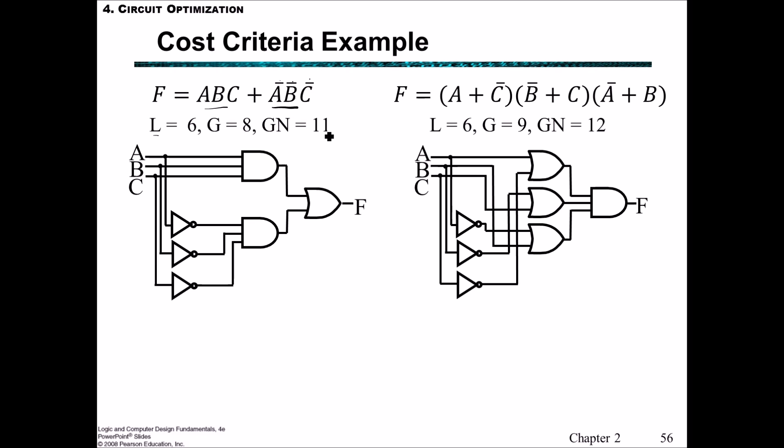For the second one, there's six literals. If you include these three terms, then we've got a gate input count of nine. And if you include the negations, another three gives you twelve.